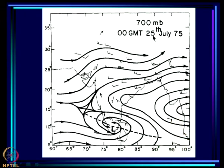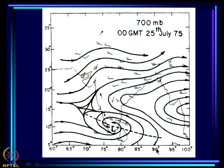On 25th July — a few days after the CTCZ disappeared from the monsoon zone — you see a low pressure system at 700 mb with streamlines showing a cyclonic circulation just around 10°N, and this is the 700 mb trough associated with this vortex.